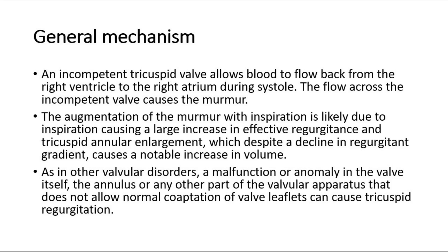For its general mechanism, an incompetent tricuspid valve allows blood to flow back from the right ventricle to the right atrium during systole, and the flow across the incompetent valve causes the murmur. The augmentation of the murmur with inspiration is likely due to inspiration causing a large increase in effective regurgitant volume and tricuspid annular enlargement, which, despite a decline in regurgitant gradient, causes a notable increase in volume.